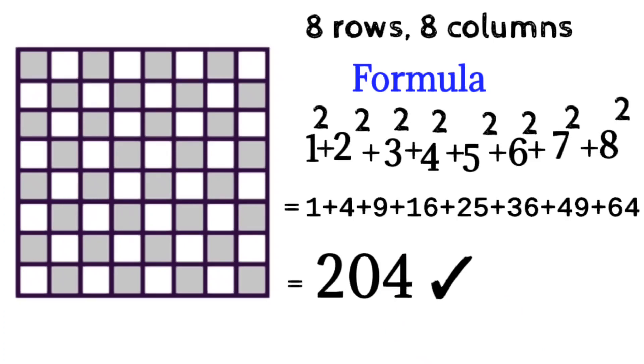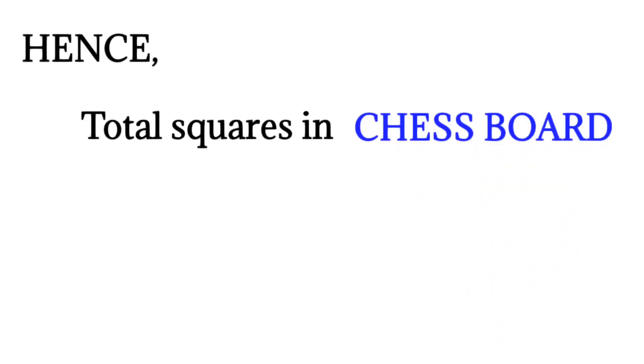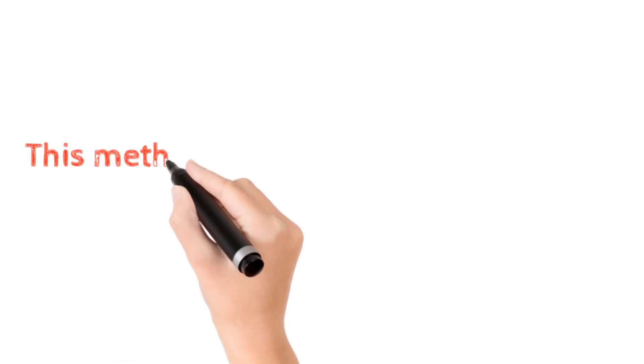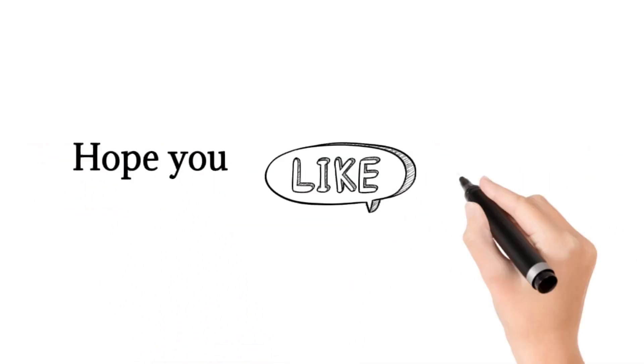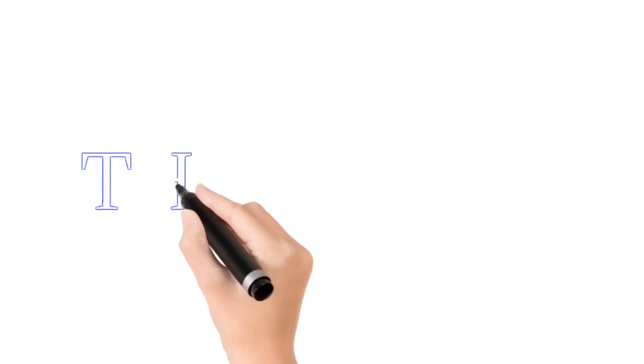So the total number of squares in this chessboard is 204. This method is used to find out the number of squares in the case of an equal number of rows and columns. I hope you liked this video — thank you for watching.